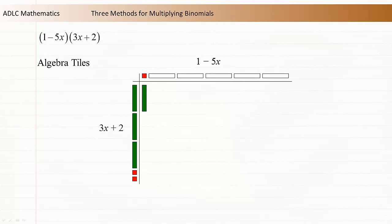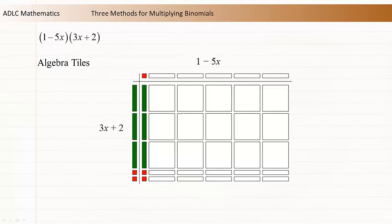Now move to the next space. The second piece is negative x long and x tall. A negative value multiplied by a positive value gives a negative value, so this tile is negative. Continue this pattern to fill in the entire rectangle.